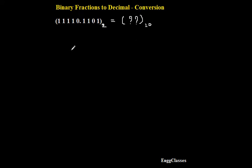Let me write the given number again. So it is 1111, four ones are there and there is a zero. Let me write that point, there is 1101.